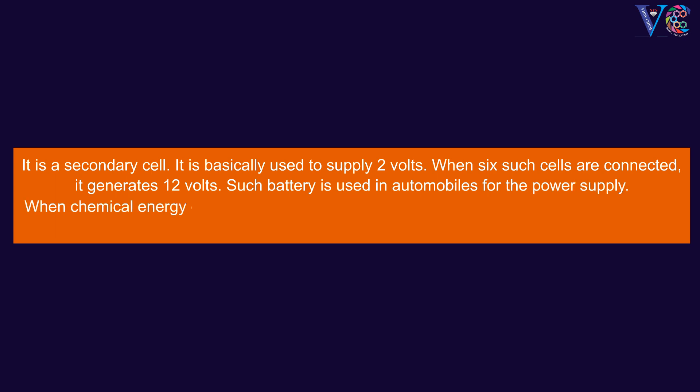When chemical energy converts to electrical energy, the cell supplies energy. This means the cell is discharging.